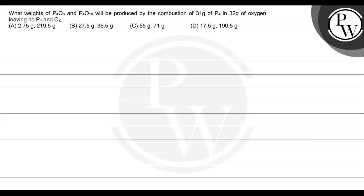Hello. Let's see this question. The question says: what weights of P4O6 and P4O10 will be produced by the combustion of 31 grams of P4 in 32 grams of oxygen, leaving no P4 and O2? The options are: 2.75 g and 219.5 g; 27.5 g and 35.5 g; 55 g and 71 g; or 17.5 g and 190.5 g.